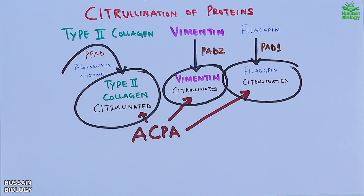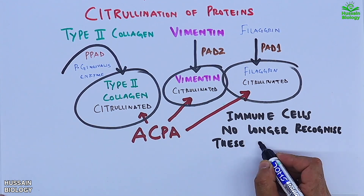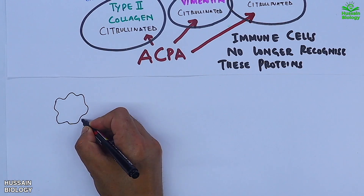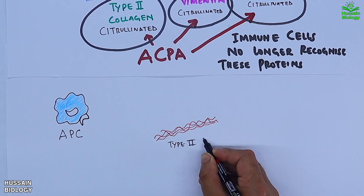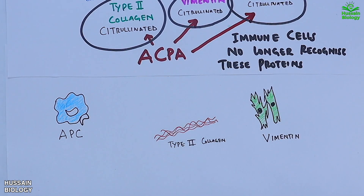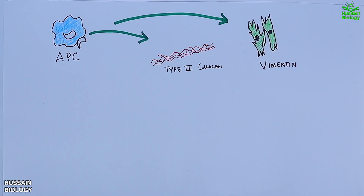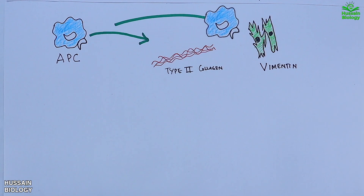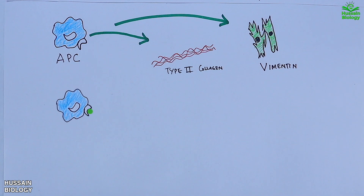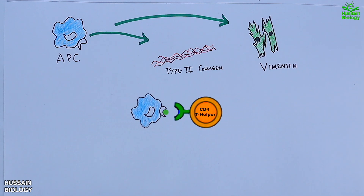As shown in the diagram, the antigen presenting cell (APC) encounters modified or citrinated proteins — type 2 collagen and vimentin. The APC picks up antigens from these proteins, then presents them to CD4 T helper cells. Upon antigen presentation, the CD4 T cells become activated.